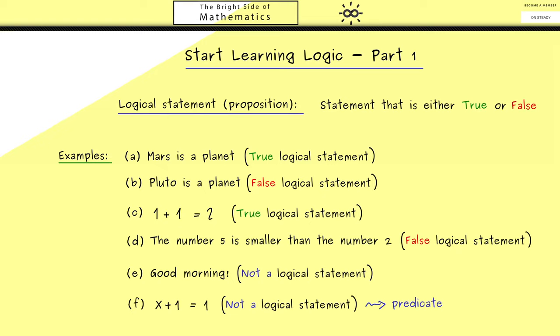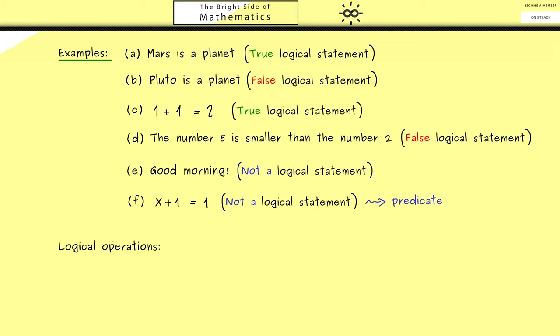Now the next step is when we have such logical statements, we also want to combine them. They are just called logical operations and they give us new logical statements. For example, the negation is defined for a given logical statement A, which could be for example 1 + 1 = 2. Then the new logical statement, the negation of A, is denoted by this line in front of A.